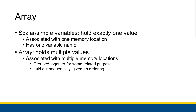Arrays, on the other hand, hold multiple values — specifically, multiple values of the same type. An array groups together multiple memory locations that are all of the same type. They're grouped because they serve some related purpose, and they're laid out sequentially with a proper ordering. When you have a scalar variable, you have a name associated with one single locker in some storage room. With an array, you have a whole line of lockers all grouped under the name of this array.